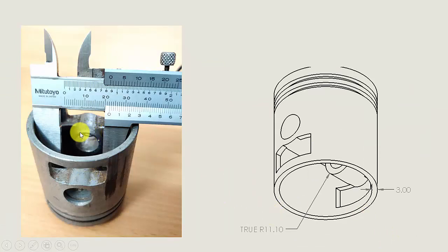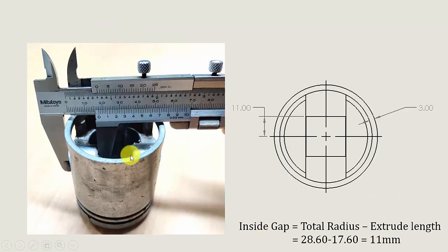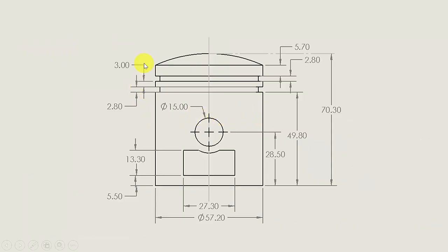There is a circular extrude at the inside of the piston head and its radius is measured as 11.10 mm, which means 22.20 mm in diameter. The length of the extrude is measured as 17.60 mm. So from the center the total radius is 28.60 and the extrude length is 17.60, giving a gap of 11 mm from the center to the extrude end. Now I have marked all the dimensions in the drawing and we will go to SOLIDWORKS.